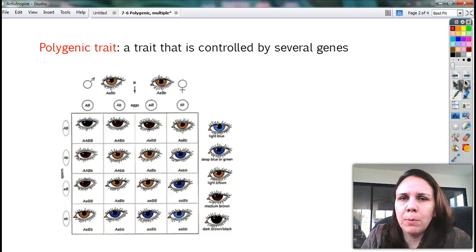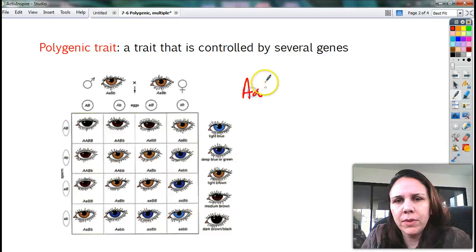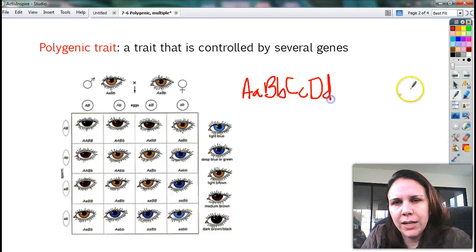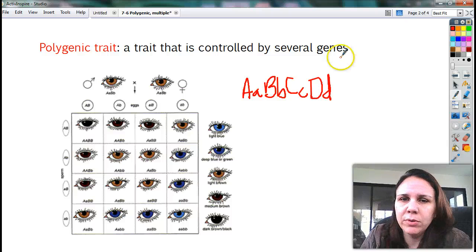So polygenic traits are much, much more difficult to predict the outcome because now instead of foiling big A, little a, big B, little b, big C, little c, big D, little d. How do you foil that? It's hard. There are big scientists that can do that. We don't.